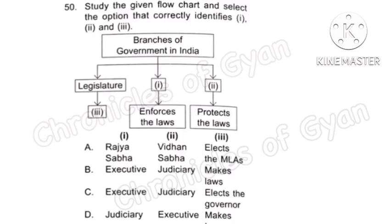Question 50: Study the given flowchart and select the option that correctly identifies 1, 2 and 3. For 1 — enforces the law — the answer is Executive. For 2 — protects the law — the answer is Judiciary. The role of Legislature is to make the law. So the correct answer is Option B.